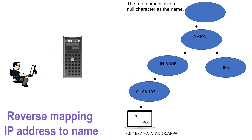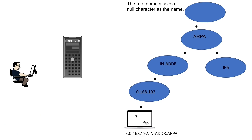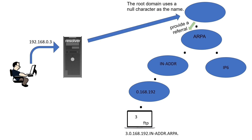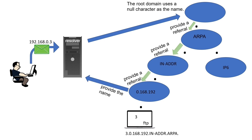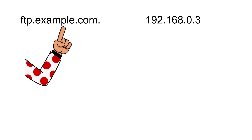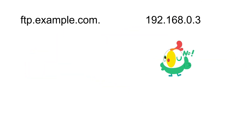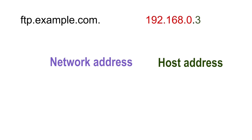In reverse mapping, a resolver system resolves an IP address with the name. Suppose the resolver system wants to know the name of the IP address 192.168.0.3. For this, it follows the same steps it uses in forward mapping. It sends the first query to the root name server and follows the referral until it gets the answer. Unlike fully qualified domain names, IP addresses do not include domain names. An IP address includes two types of addresses: the network address and the host address.